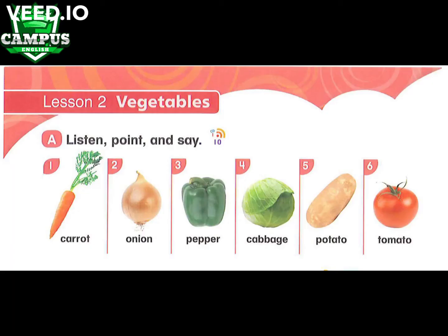Page 6, Lesson 2: Vegetables. A. Listen, point, and say. 1. Carrot. 2. Onion. 3. Pepper. 4. Cabbage. 5. Potato. 6. Tomato.